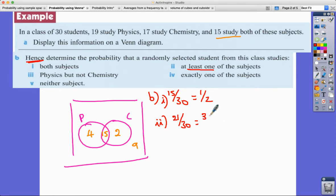Third one: physics but not chemistry. So we've got physics people, these people also do chemistry, there's four people who just do physics no chemistry out of 30, so that would be 2/15. Can't go any further with that simplification.